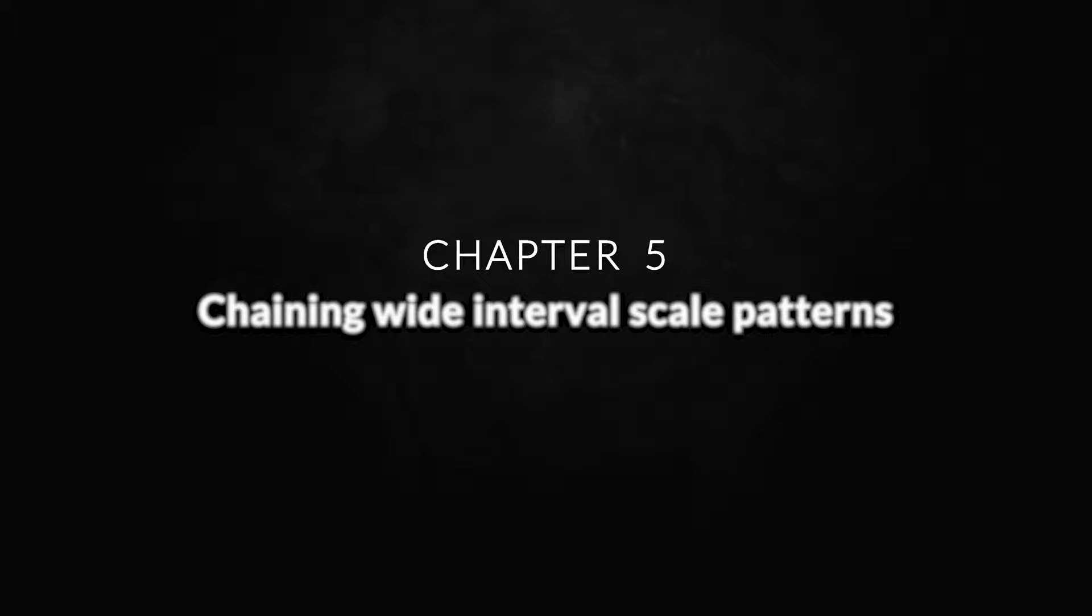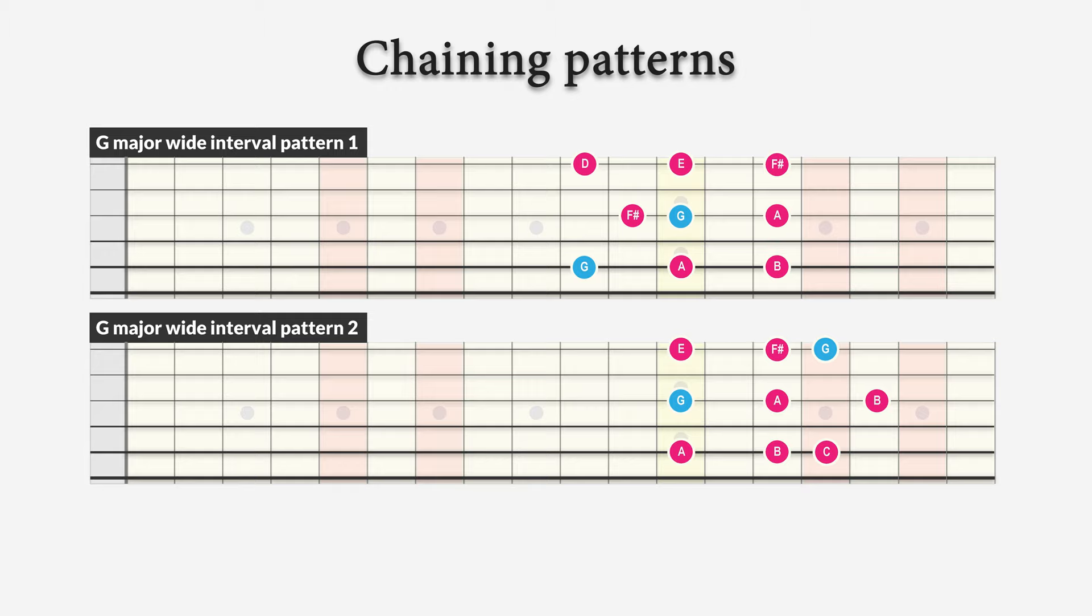Now by chaining these patterns, we can really extend the open sound in our improvisation. And this can sound pretty cool if you play a couple of adjacent patterns in a row. Now let's start with two shapes chained together over the G major chord, that is part of the progression that resolves to E flat major in the end.